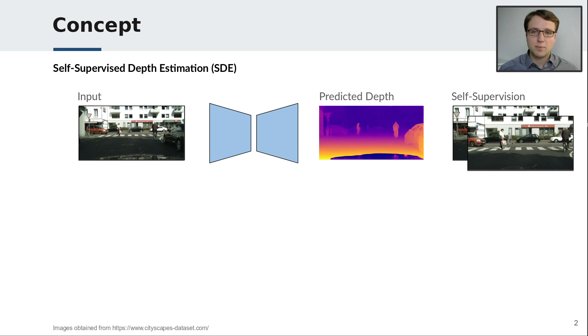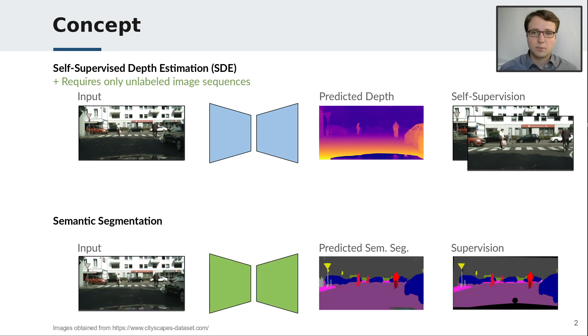Self-supervised depth estimation is the task of predicting the distance to the camera. It can be learned without explicit depth supervision, only using unlabeled image sequences of a moving camera. The learning is based on a differentiable geometric image warping and photometric loss. On the other side, semantic segmentation is the task of classifying each pixel of an image. In contrast to self-supervised depth estimation, it requires human annotations for the training.